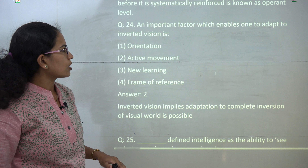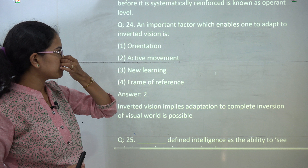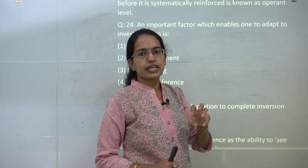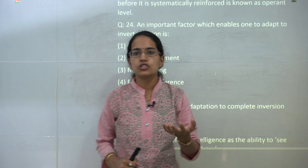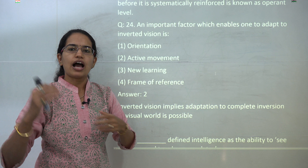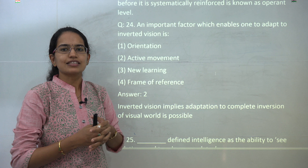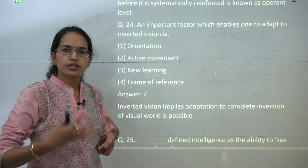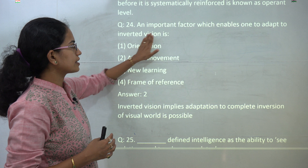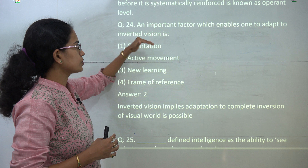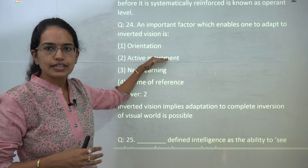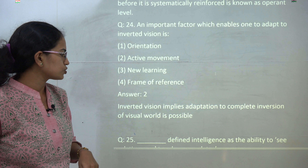The next question talks about the factors that help us adapt to an inverted vision. The correct answer is active movement. If there is independent existence, active movement would be less; if there is dependence, more work is needed to solve the issue. Therefore, to adapt to an inverted vision, the correct factor is active movement. The correct answer is option 2.